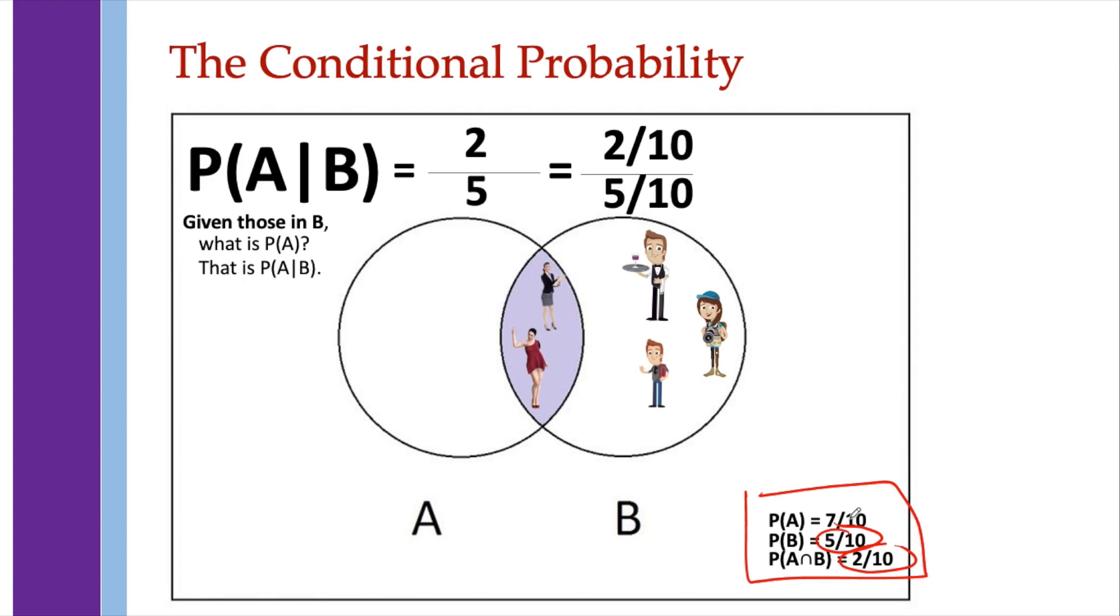So this shows that the probability of A given B is just this value over this value. In other words, the probability of A intersection B all over the probability of B.